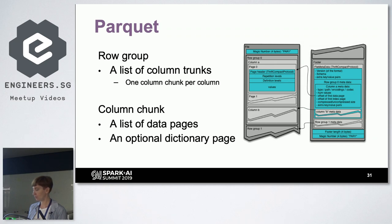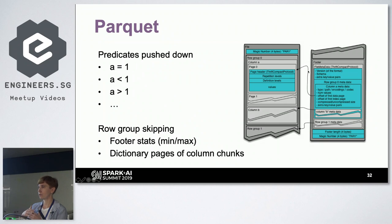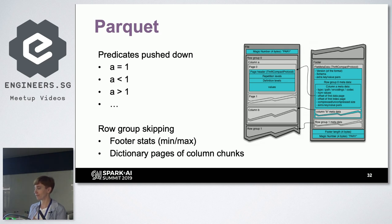There are more details about how row group skipping works. Based on the previous topic — if you can skip more data, it will work faster.